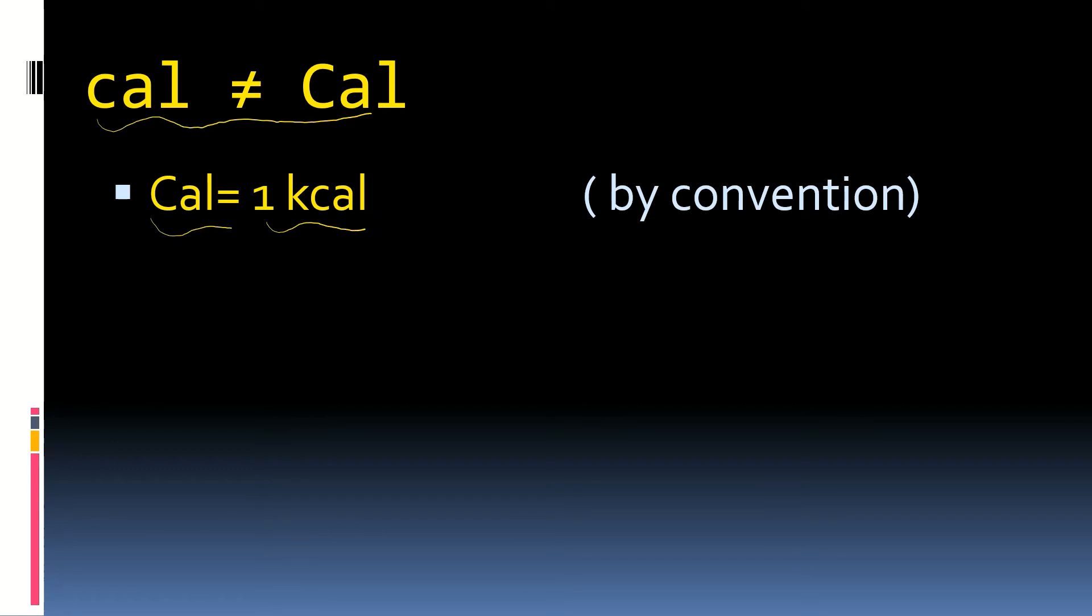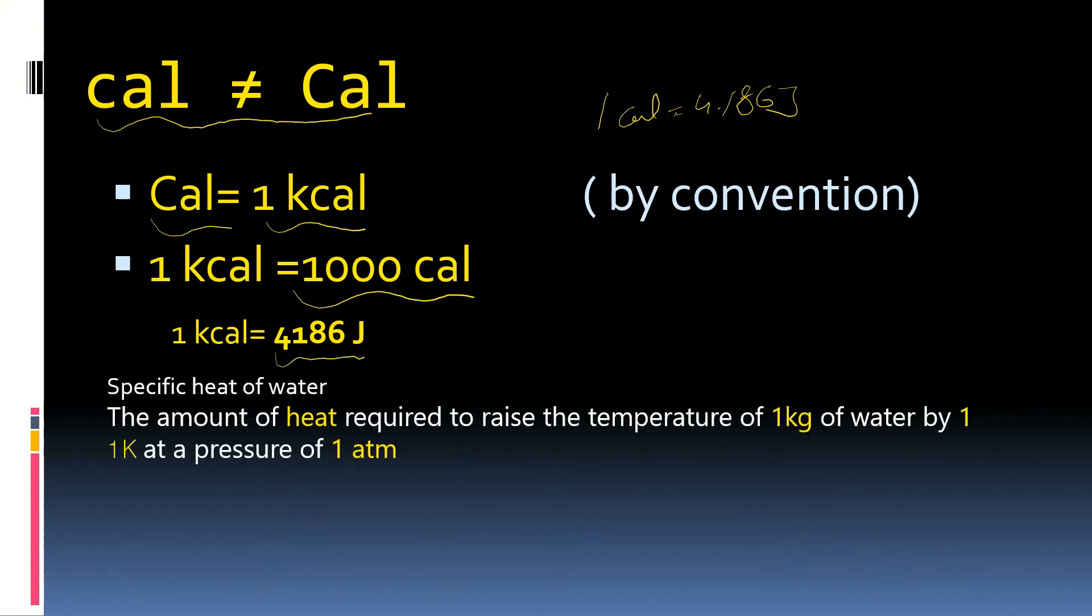The small calorie is not equal to capital Calorie. This is by convention that 1 Calorie with capital C is 1 kilocalorie. You know 1 kilocalorie is 1000 calories. You know that 1 small calorie is 4.186 joules. So, 1 kilocalorie will be equal to 4186 joules.